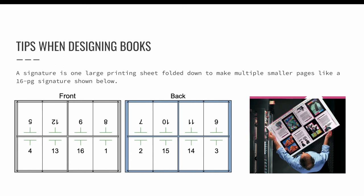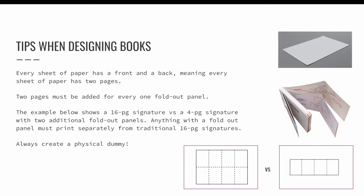Notice how the page numbers do not align with reader spreads — page four is printing next to page 13. This is an example of a printer spread, an imposition that shows how pages must be laid out for printing. As a designer, you should also know that every sheet of paper has a front and a back, meaning every sheet of paper has two pages. If you add one fold-out panel in your design, you will need to add a second page to show where the back of that sheet will land. Fold-out panels must be printed separately from the rest of your pages. The best way to see if your design is functional is to create a physical printer spread in position, then fold and assemble it — this is called making a dummy.